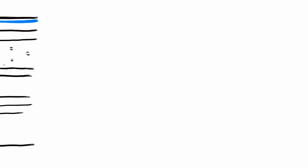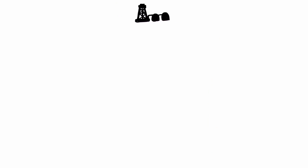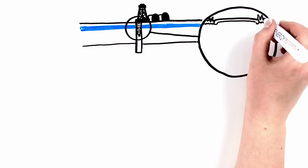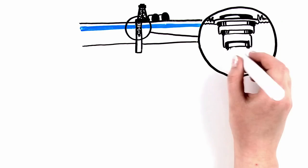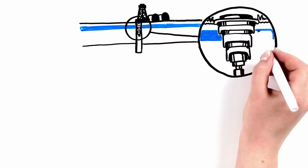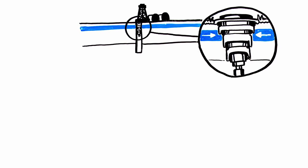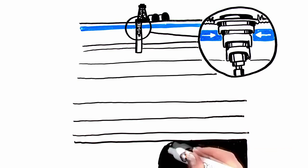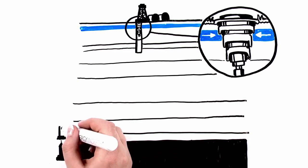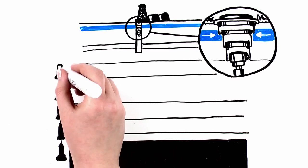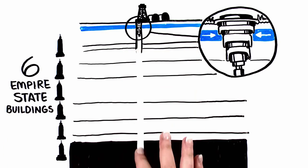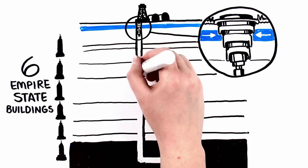Before fracking can begin, a well is drilled through multiple layers of rock. During this process, the wellbore is cemented and cased to seal it off from shallow groundwater. While usable groundwater sources are typically located near the surface at a few hundred feet, these shale formations are thousands of feet beneath the surface—around the same depth as six Empire State Buildings stacked on top of each other.